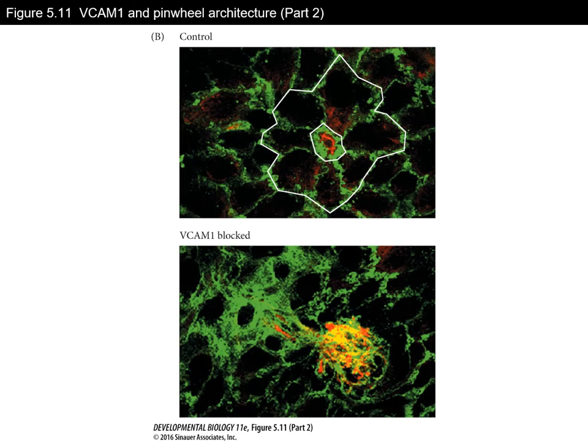Showing the role of VCAM1 in these pinwheel formations — in this experiment they used an antibody that blocks VCAM1. When you block VCAM1, those pinwheels are no longer formed. This structure is important for the potency of this neural structure. So it's likely that over time, as you age, the amount of VCAM1 being expressed in your neural cells is reduced, leading to this reduction in pinwheel formation and subsequent neural degradation.